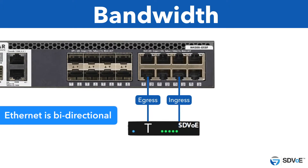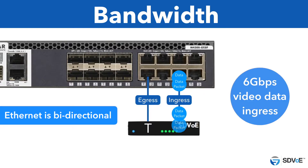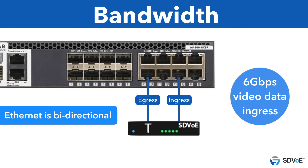Ethernet is fully bi-directional — data can be received and sent simultaneously. However, video data only actually consumes bandwidth in one direction. For example, the ingress of a switch port could be consuming 6 gigabits of video data, but the egress of that port could be tiny because video data is not being sent back out.